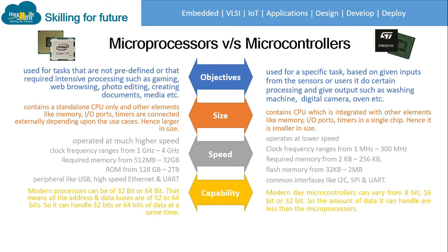Regarding capability: modern processors can be 32-bit or 64-bit — as seen in Windows operating systems moving from 32-bit to 64-bit — meaning all address and data buses handle 32 or 64 bits of data simultaneously. Modern microcontrollers can vary from 8-bit, 16-bit, or 32-bit, so the amount of data they can handle is less compared to microprocessors.